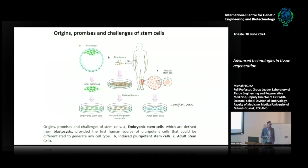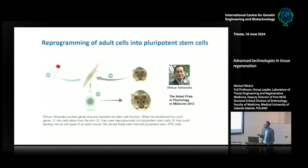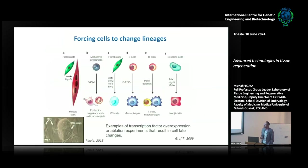Talking about stem cells, which are crucial in regeneration and regenerative therapies, we actually have three main origins. Embryonic stem cells I haven't talked about, because they are subject to ethical and legal considerations depending on the country. We have induced pluripotent stem cells — I will tell you about them in just a few slides. And other stem cells, especially I will talk today about mesenchymal stem cells derived from fat tissue.